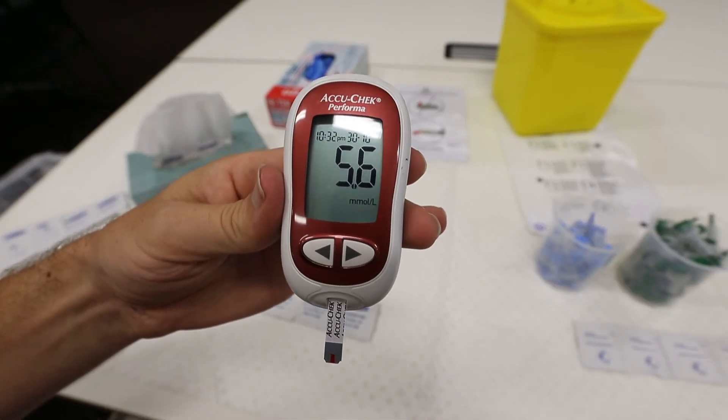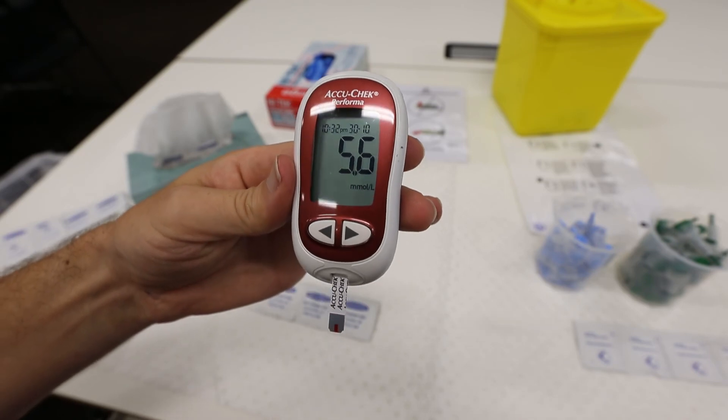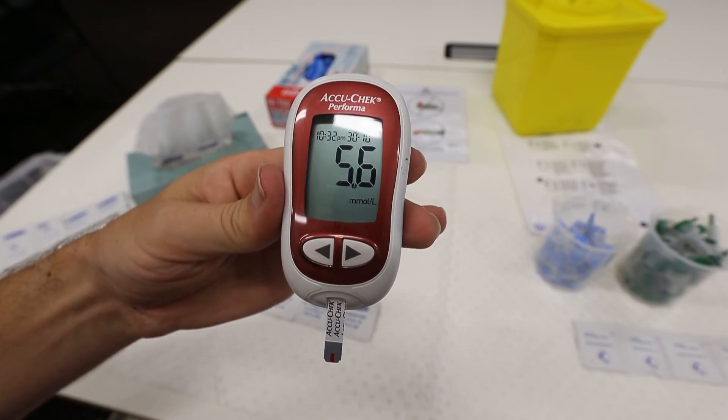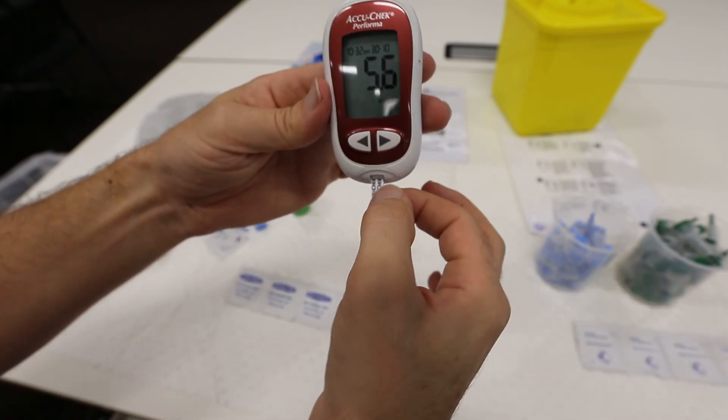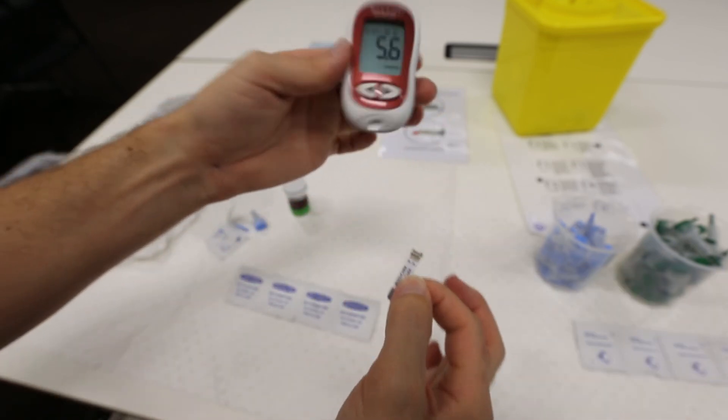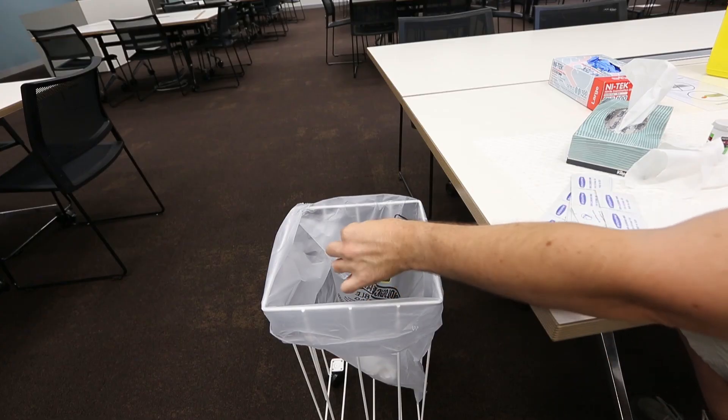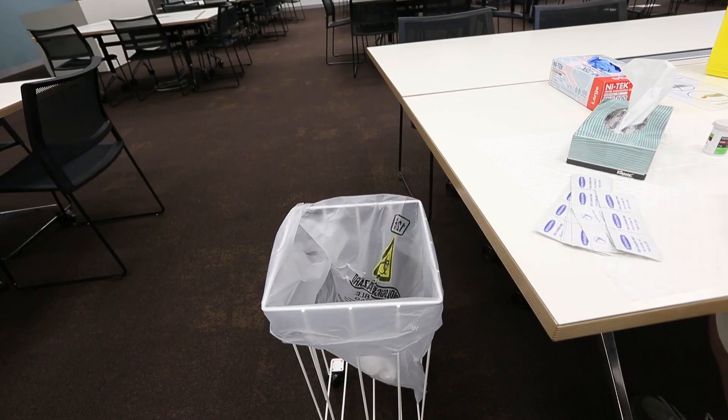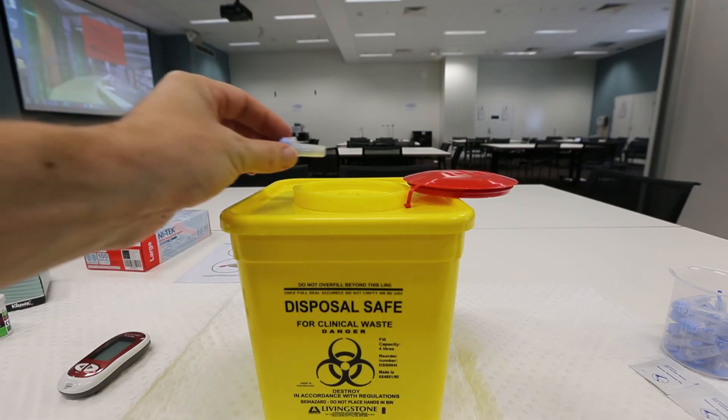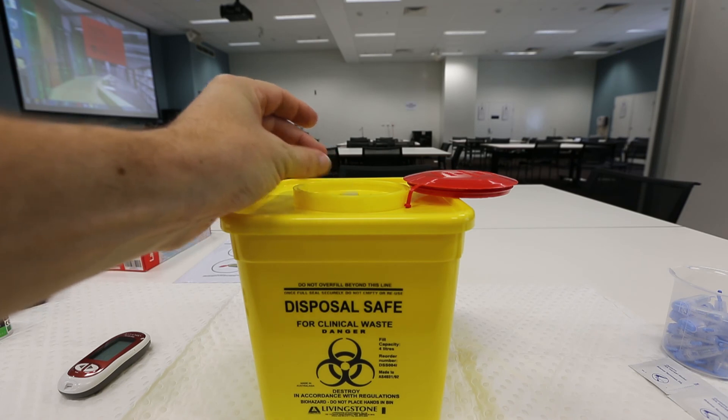Just be sure that you use the same glucose test meter for each of your measurements in today's class. When you are done, remove the test strip and place it into one of the biohazard bags which are dotted around the room. You can also place your tissues and alcohol swabs into these same bags.